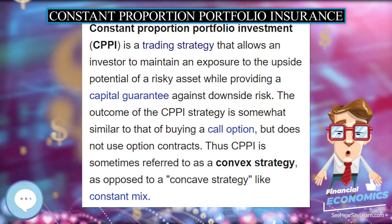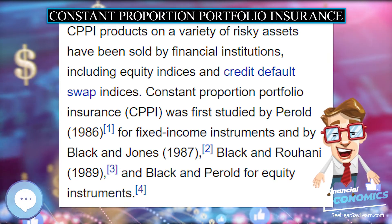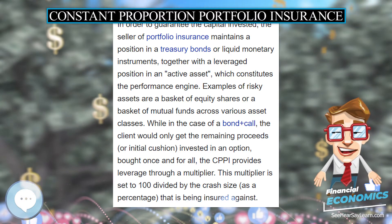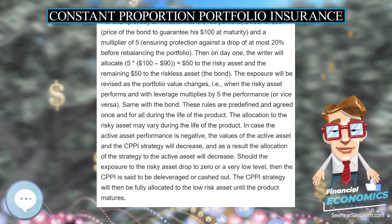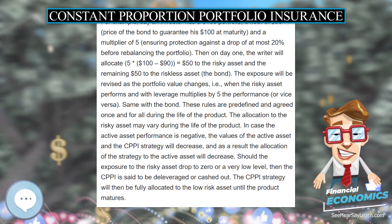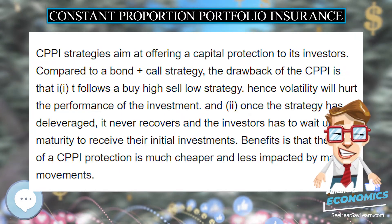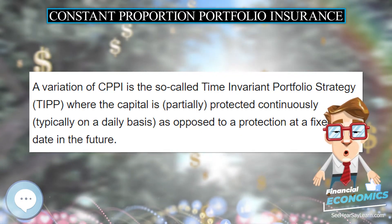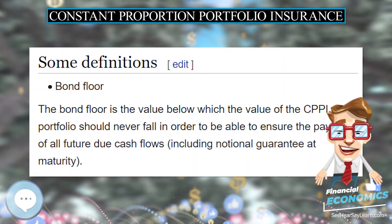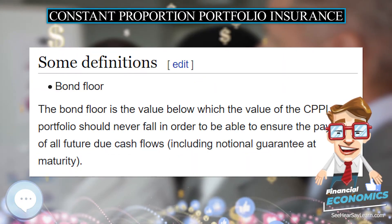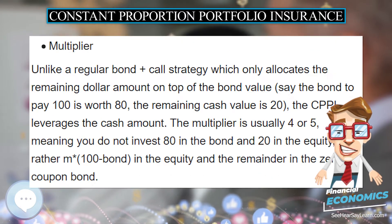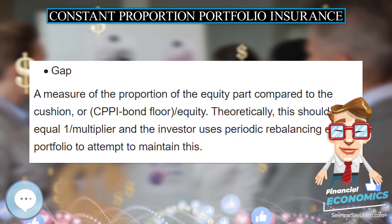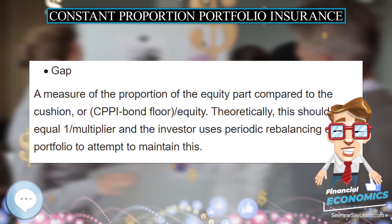The multiplier is usually 4 or 5, meaning instead of investing $80 in the bond and $20 in the equity, you invest M × $100 in the equity and the remainder in the zero coupon bond. A measure of the proportion of the equity part compared to the cushion — or CPPI bond floor to equity ratio — theoretically should equal 1 divided by the multiplier. The investor uses periodic rebalancing of the portfolio to attempt to maintain this dynamic trading strategy.